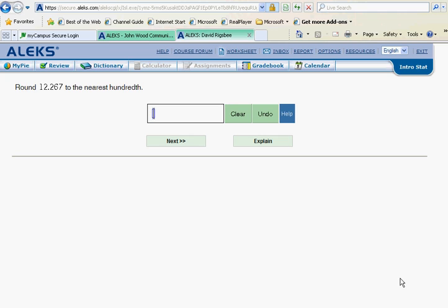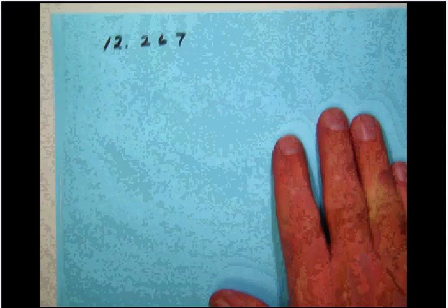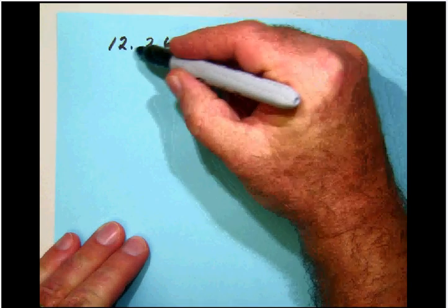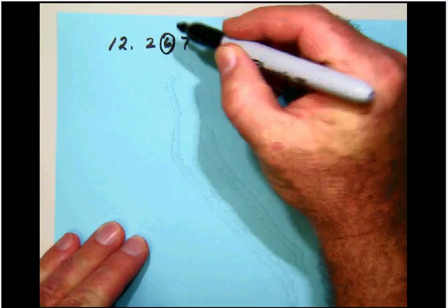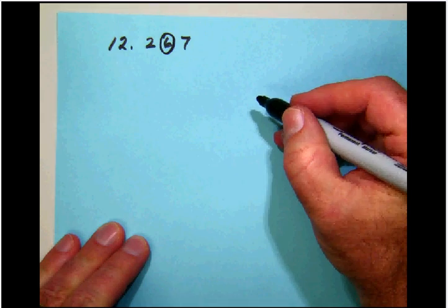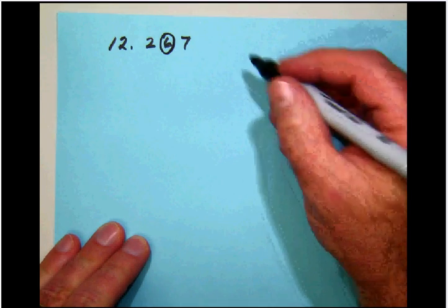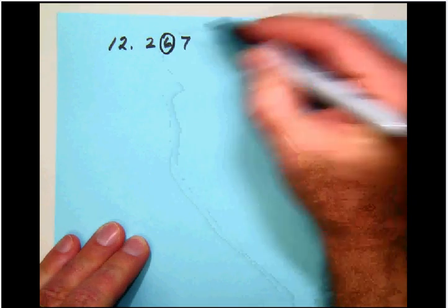Notice here that we want to round this number to the nearest hundredth, so let's copy that problem down and talk about how we do that. First, if we want to round this to the nearest hundredth, we'll look at the decimal point and find the hundredths place. Remember, hundredths is the second digit to the right of the decimal. Put a circle on that.